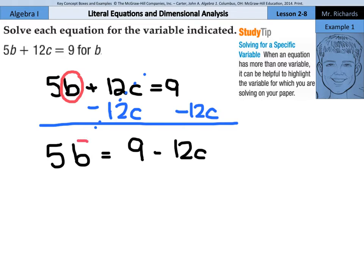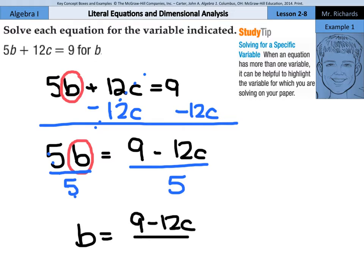We're left with 5b equals 9 minus 12c. And again, we're still trying to solve for this b. And to get the b alone now, divide both sides by 5. b is going to equal the 9 minus 12c all divided by 5. And that is solving the equation for b.